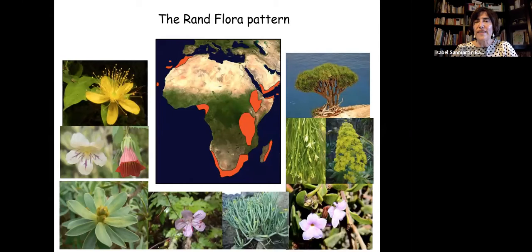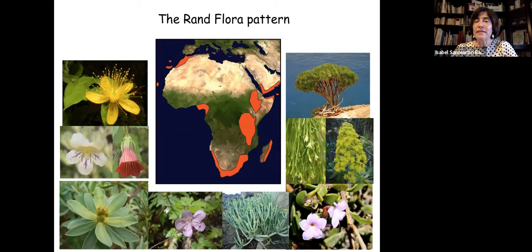The Rand Flora is a particular floristic biogeographic pattern in which sister species or sister clades live on the margins or edges of the African continent. For example, one species in the Canary Islands and its sister species in Oman, southern Arabian Peninsula, Ethiopia, Yemen, or eastern or southern Africa — forming a ring around the continent. Interestingly, this pattern doesn't concern only one family of angiosperms but is present across many different families belonging to different orders and superorders, separated for millions and millions of years yet showing exactly the same pattern.